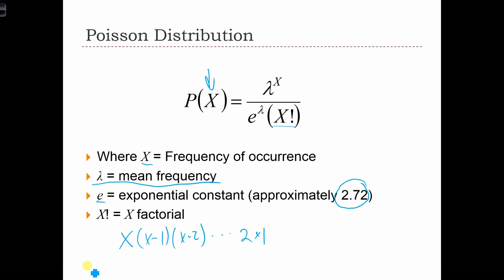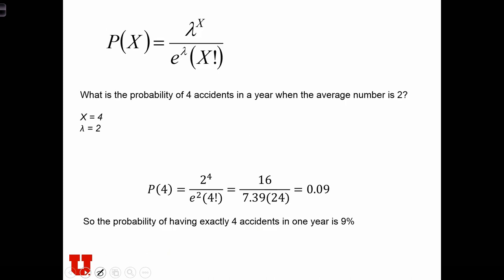So let's have some practice. Suppose we want to know the probability of having 4 accidents in a year when the average number of accidents at an intersection is just 2. In this case, the number of events we're interested in x is equal to 4. We want to know the probability of there being 4 accidents. And on average, we know that there are 2 accidents per year. So lambda equals 2.